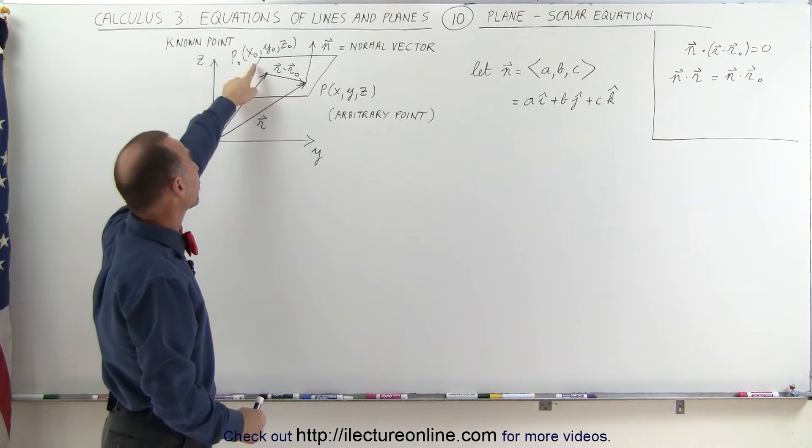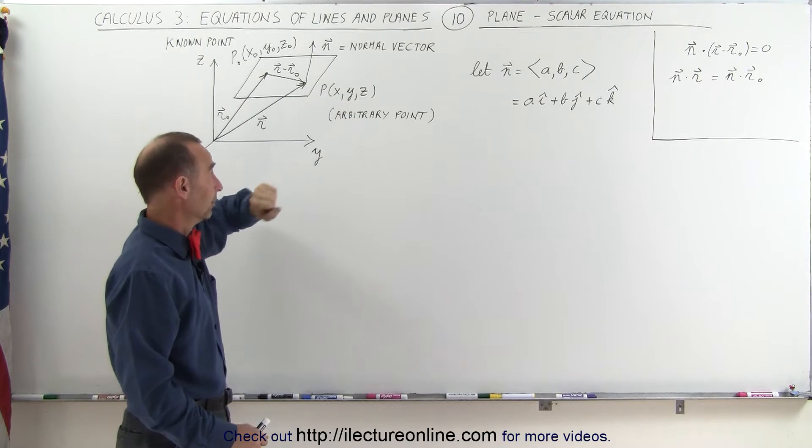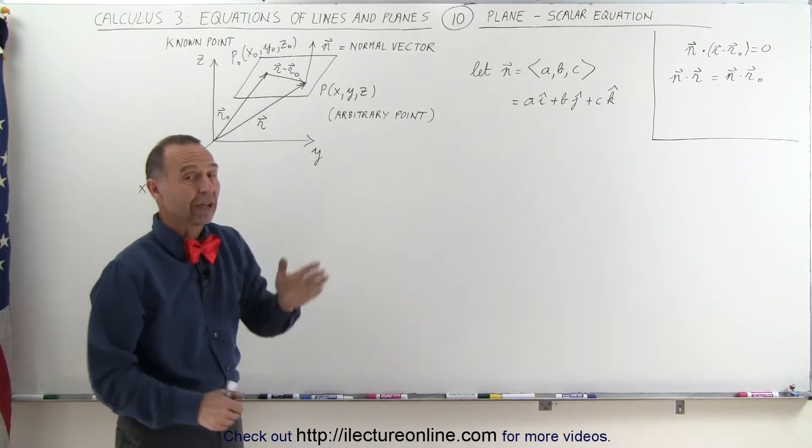We have a known point with the coordinates x, y, and z sub-naught. We have an arbitrary point with the coordinates x, y, and z. And we have, of course, the normal vector.